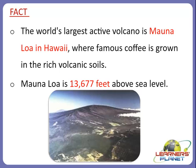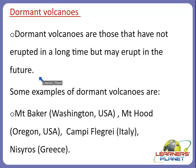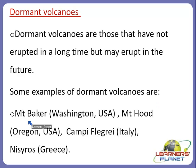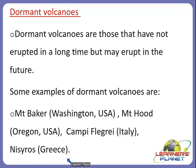The second type of volcanoes are dormant volcanoes — those that have not erupted in a long time but may erupt in the future. Examples of dormant volcanoes include Mount Baker in Washington USA, Mount Hood in Oregon USA, Campi Flegrei in Italy and Nisyros in Greece.